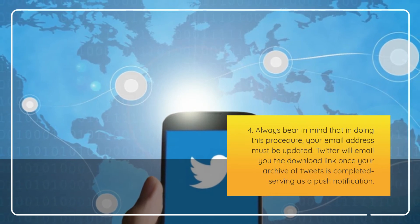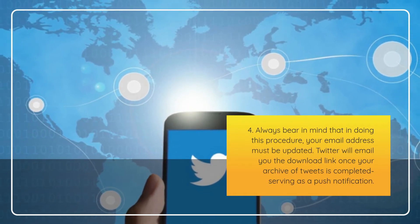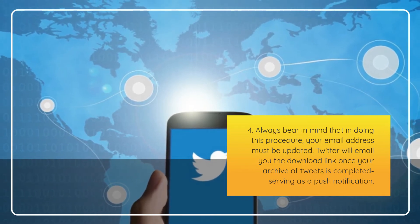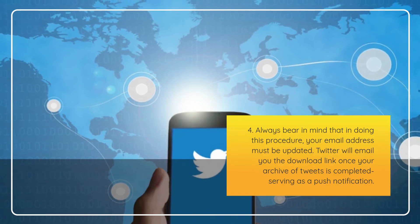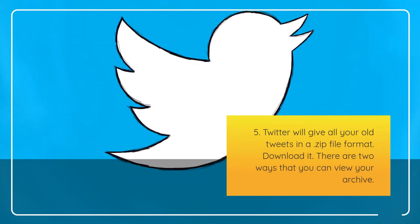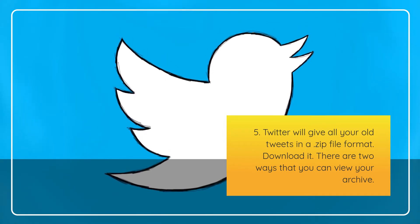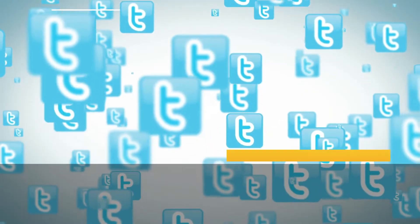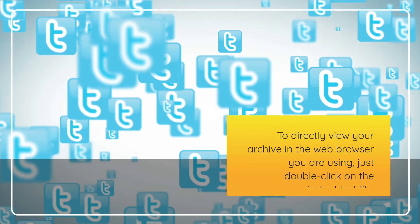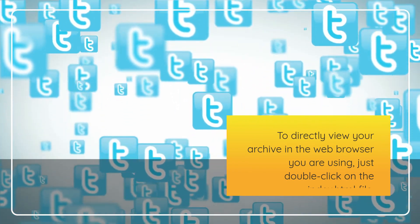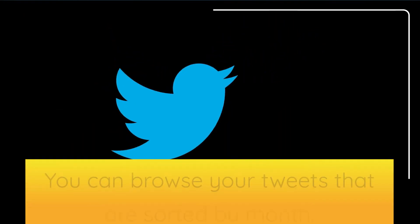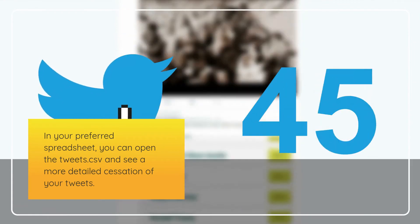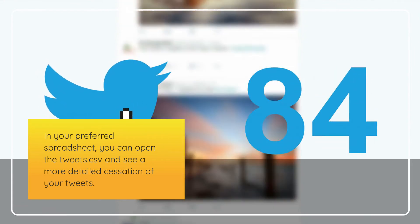Bear in mind that your email address must be updated before doing this procedure. Twitter will email you the download link once your archive is complete. Your old tweets will arrive in a .zip file format. Download it. There are two ways to view your archive: double-click the index.html file to view it directly in your browser, or open the tweets.csv file in your preferred spreadsheet for a more detailed view of your tweets sorted by month.